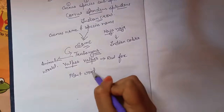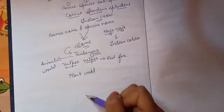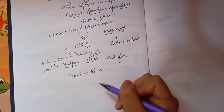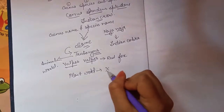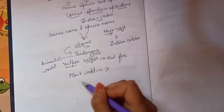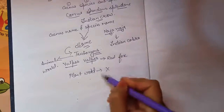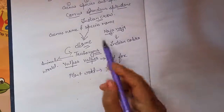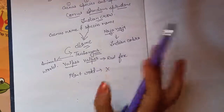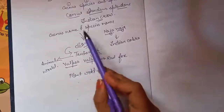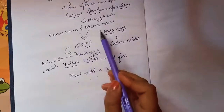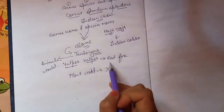These Tautonyms are only considered in the case of the animal world; they are not considered in the plant world. You will never find Tautonyms when you scientifically name a plant. In the plant world there is no Tautonyms, and there is no scientific name of any plant where the genus name and the species name will be the same.